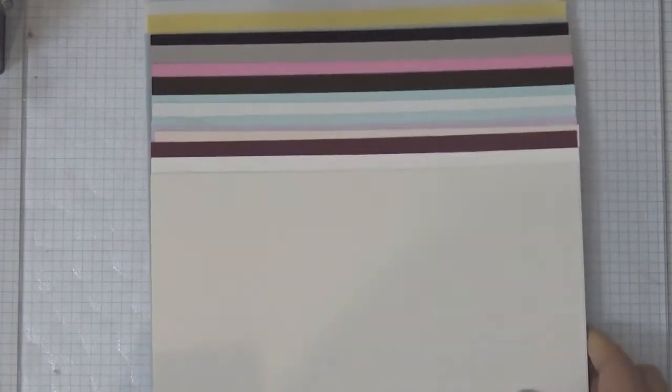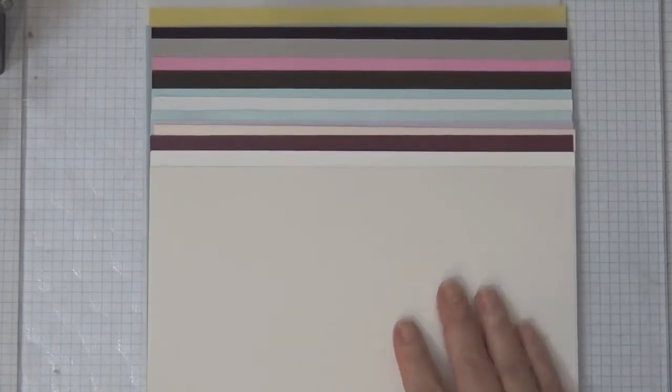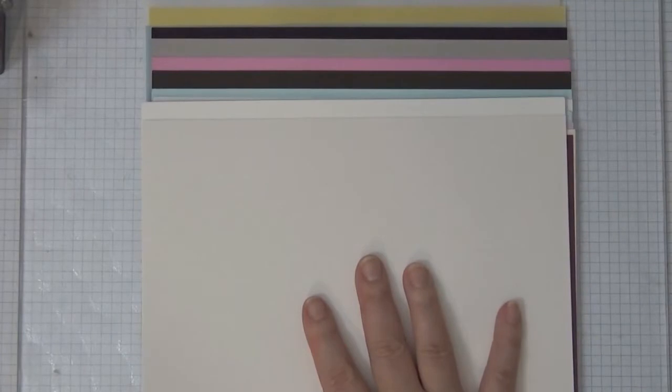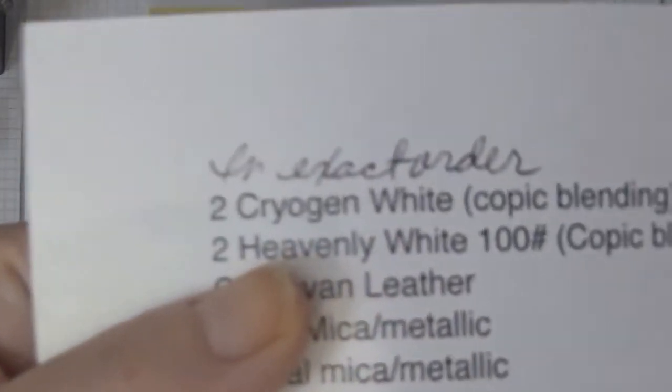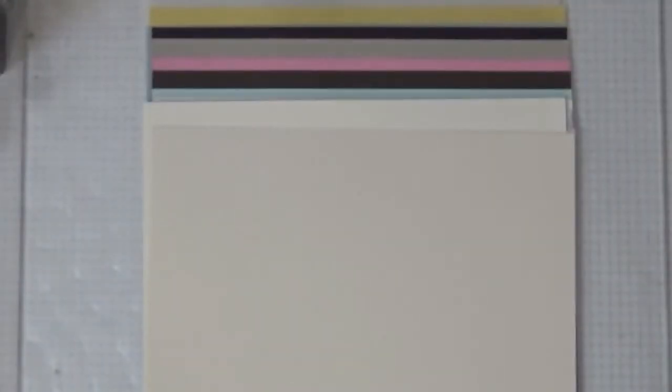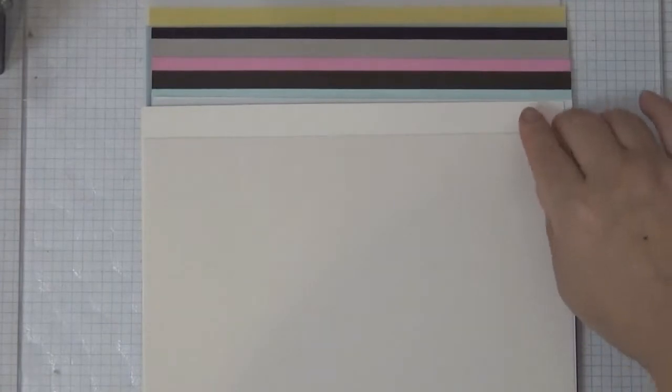So I wanted to quickly just share some of the ones that she has and she wrote down all the different types of cardstocks here. These two at the top, which I won't be using, are Copic blending paper. The top two is the Crojan white, excellent for Copic blending.